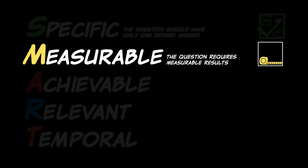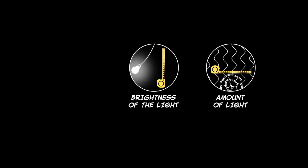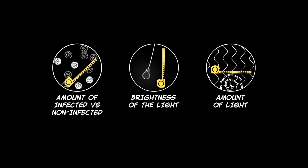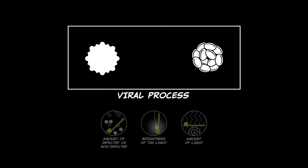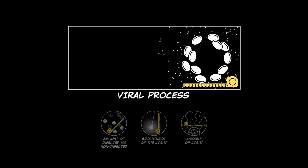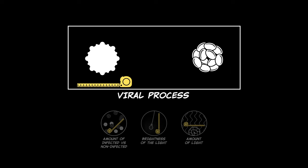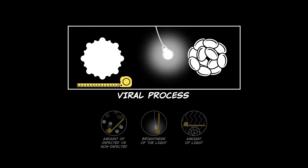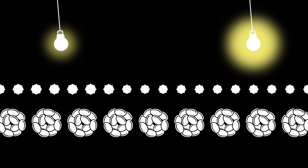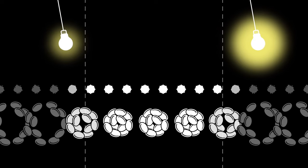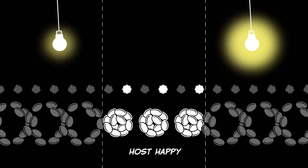M: Measurable. A testable question should lead to answers that have measurable results. You can measure the amount of light organisms get, the brightness of the light, and the amount of infected versus non-infected cells in a sample. One challenge is that light affects both hosts and viruses — too little light and the host is unhappy, too much light and the host is unhappy. Kim and Kay's team found a narrow range of light intensities that affect the virus but keep the host happy, so the question is measurable.